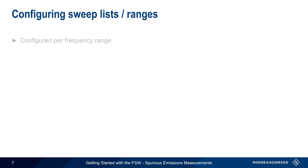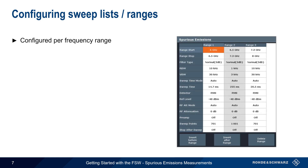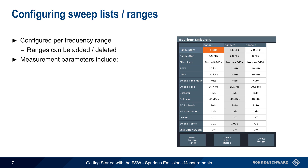Let's look more closely at how ranges are configured. Ranges can be added or deleted using the buttons at the bottom of the screen. In addition to the start and stop frequencies, measurement parameters include the filter type, as well as the resolution and video bandwidths to be used.